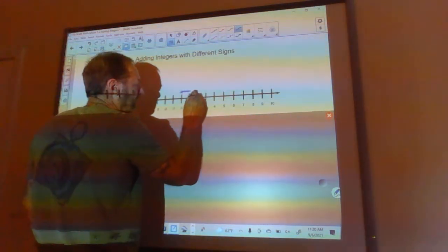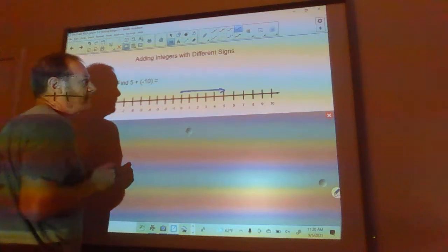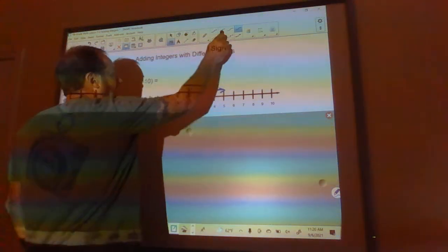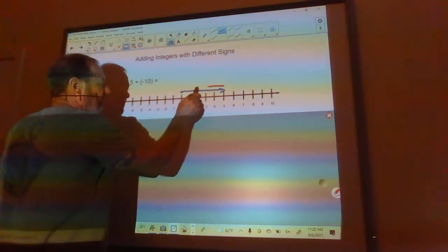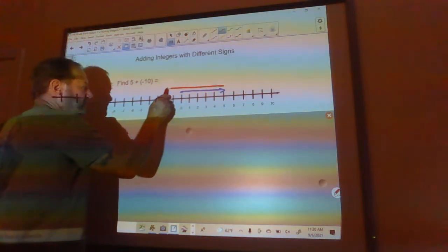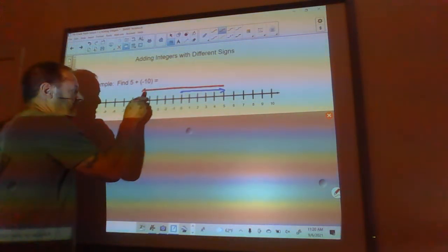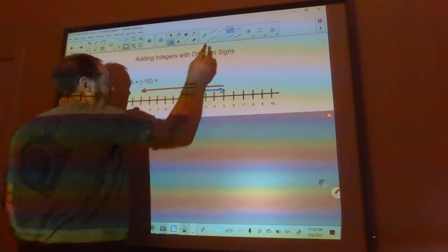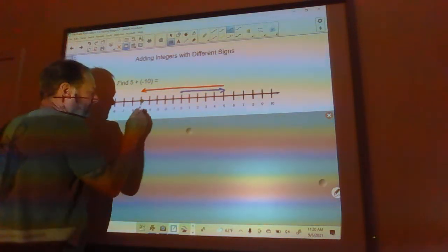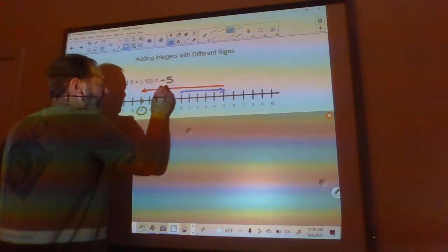Okay, what about if they have different signs? So 5 plus negative 10. So 5, remember 5 is positive, it goes to the right. So we go 5 to the right, and then from there we go 10 to the left. So remember, we went 5 back to here: 6, 7, 8, 9, 10. We end up right there at negative 5. So the answer to this is negative 5.